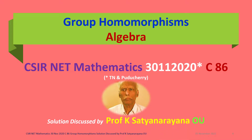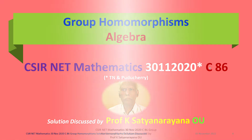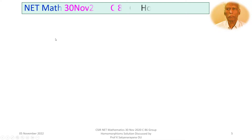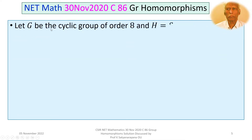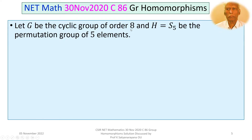We now discuss the solution of a problem from the section Algebra, and the problem is on group homomorphisms. This question appeared in the CSIR National Eligibility Test in Mathematics held on 30th November 2020, from section C. The problem is: let G be the cyclic group of order 8 and H equal to S5, the permutation group on 5 elements.